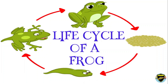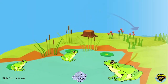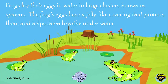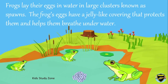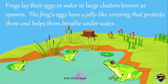Life Cycle of a Frog. Frogs lay their eggs in water in large clusters known as spawns. The frog's eggs have a jelly-like covering that protects them and helps them breathe underwater.